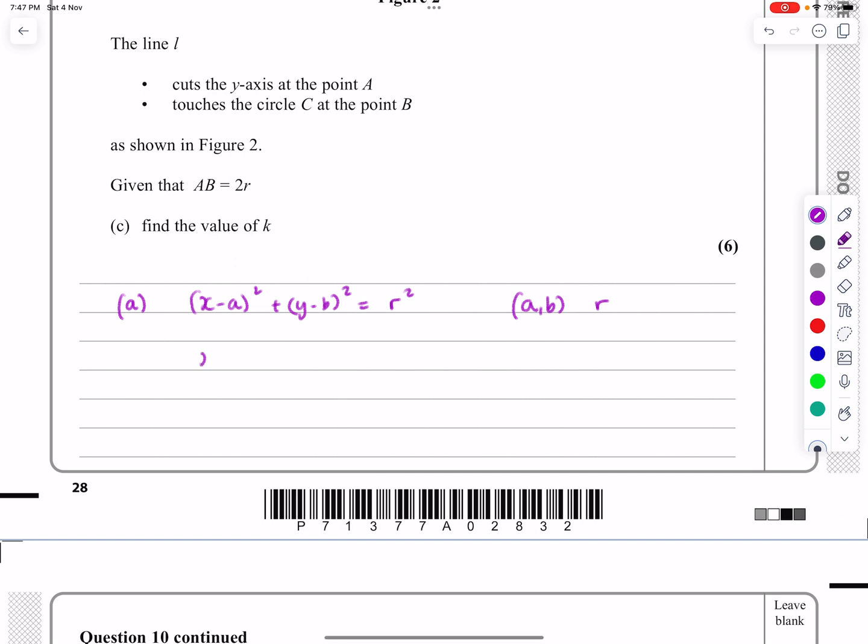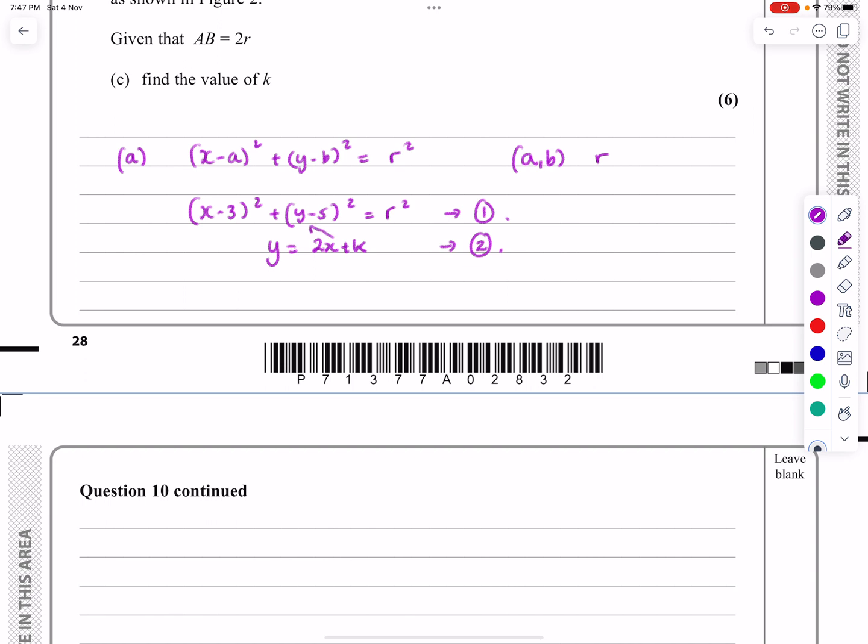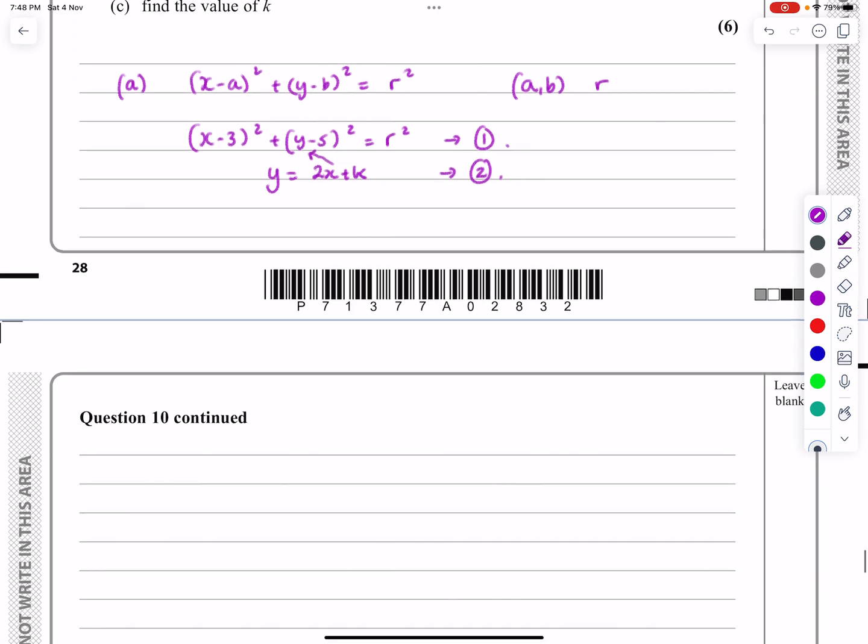So in this case, I've got (x - 3)² + (y - 5)² = r². So that's the equation of the circle. And then I've also got the equation of a straight line, y = 2x + k. So that's the second equation. And what I need to do is to solve these two simultaneously.